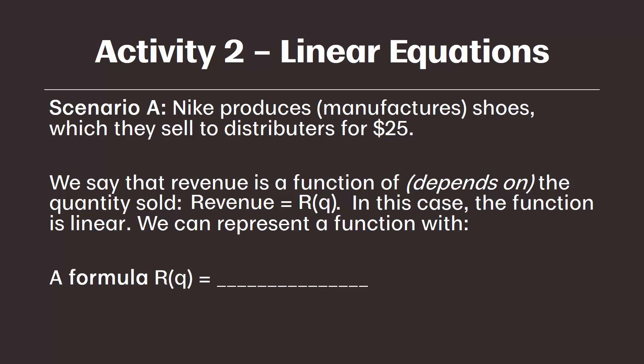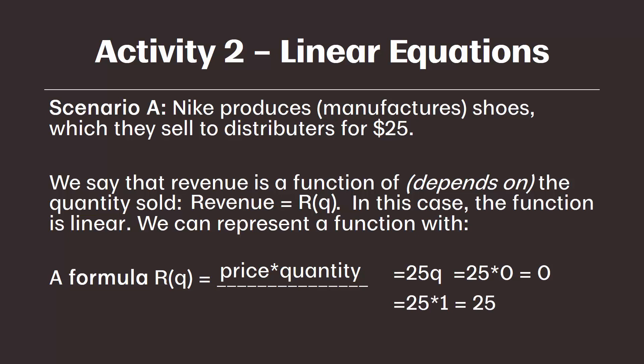We can represent a function with a formula. We would say R(Q) equals price times quantity, or P times Q. If we fill in the variable of price — which we were given in this problem as 25 — then our formula would actually just be 25Q, or 25 times Q, with Q being quantity. We'd be able to determine the revenue at various quantities. For example, if we sell zero units, we'd have zero revenue; one unit gives us $25 in revenue; two units gives us $50 in revenue, and so on.